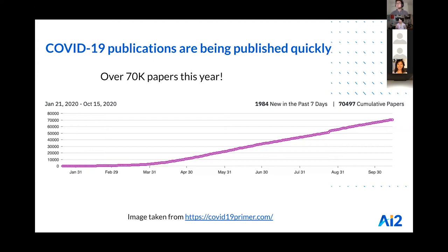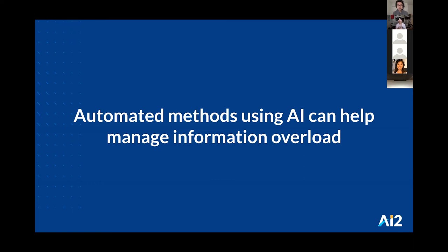To start motivating this problem: COVID-19 literature has been published very quickly. More than 70,000 new papers have been published since March alone, amounting to several hundred new papers a day. It can be really hard for clinicians and researchers to keep up with the latest findings given this degree of publishing. So to help manage information overload, there is a clear need for automated methods that leverage AI techniques to assist readers in managing this large volume of papers.